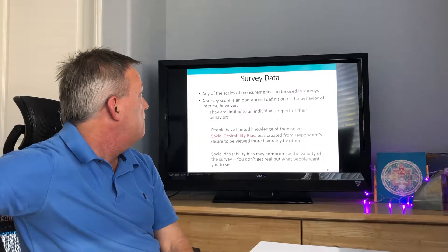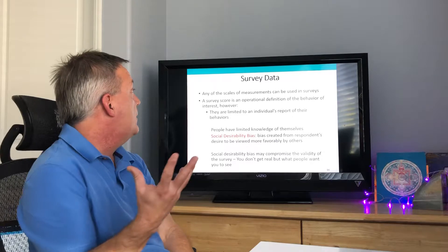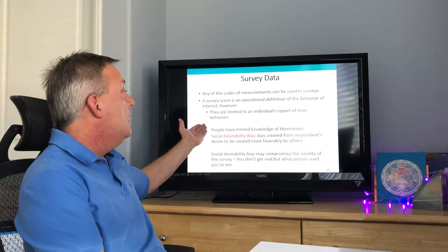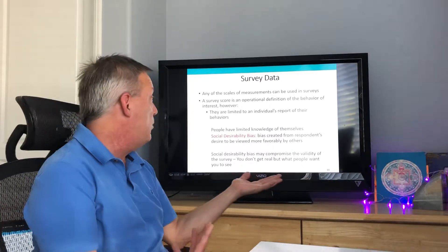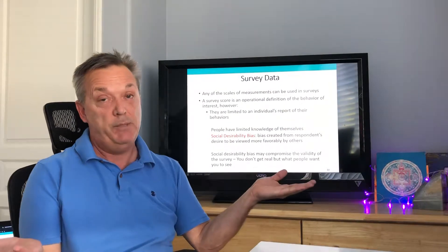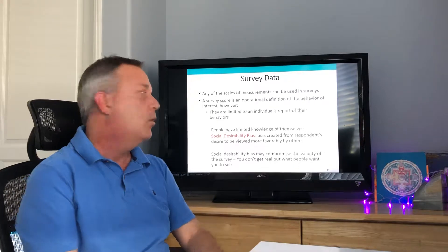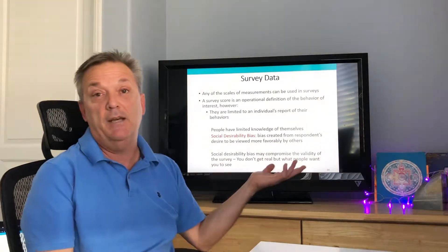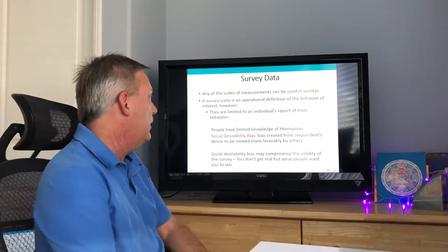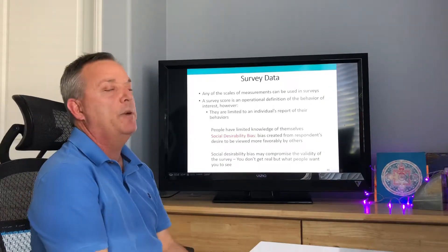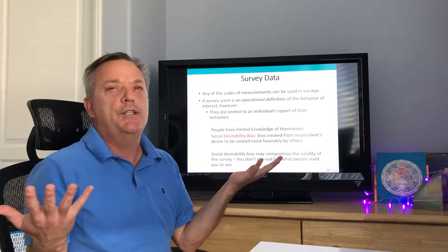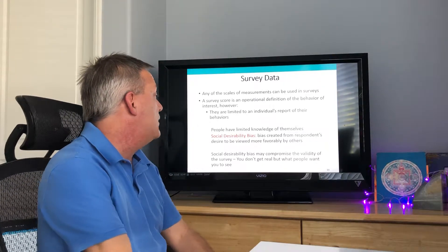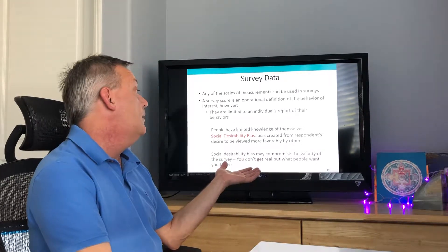Any of the scales of measurement can be used in surveys as an operational definition of the behavior of interest. However, surveys are limited because people have limited self-knowledge. They're also subject to social desirability bias — a bias created from a respondent's desire to be viewed more favorably by others, similar to presenting your best persona on social media. Social desirability bias may compromise the validity of the survey.